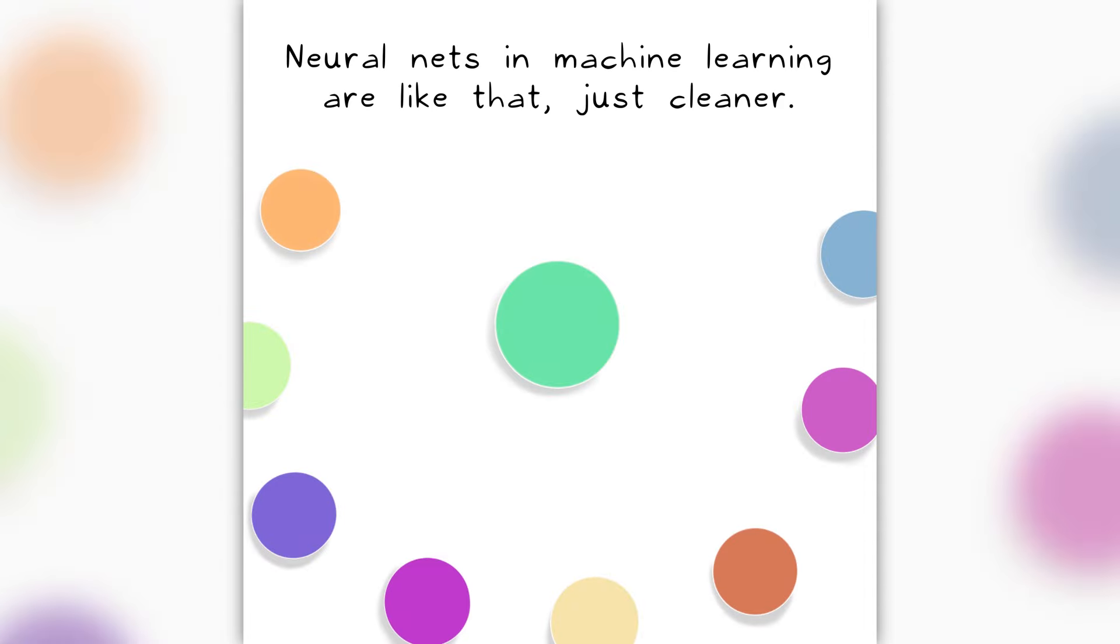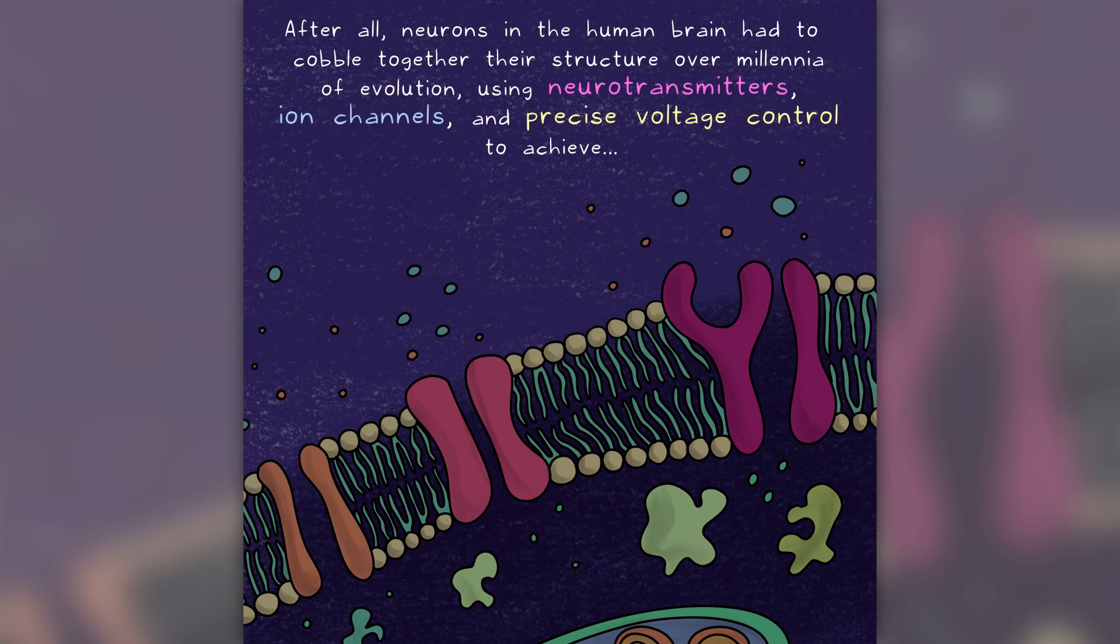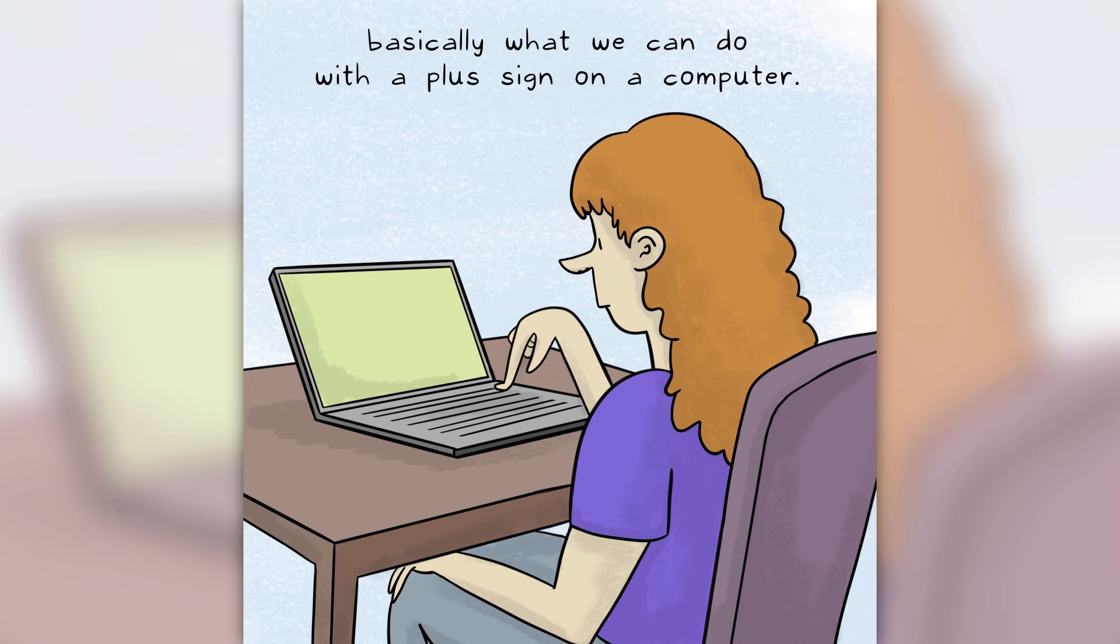Neural nets in machine learning are like that, just cleaner. After all, neurons in the human brain had to cobble together their structure over millennia of evolution using neurotransmitters, ion channels, and precise voltage control to achieve basically what we can do with a plus sign on a computer.